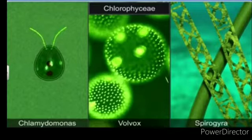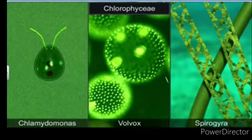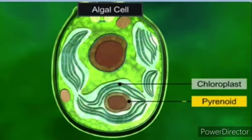The members of Chlorophyceae are commonly called green algae because of the presence of chlorophyll. The plant body may be unicellular, colonial, or filamentous. They are usually green in color because the dominant pigments are chlorophyll A and chlorophyll B. The pigments are present in the chloroplast.